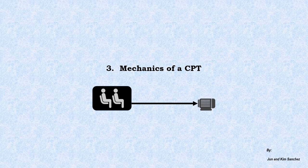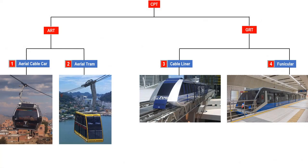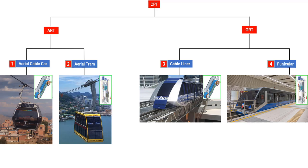This section covers the mechanics of a CPT. The types of movements of the four different types of CPTs can be correlated to an elevator or escalator. The propulsion mechanisms of an aerial cable car and cable liner are almost like an escalator, while the propulsion mechanisms of an aerial tram and a funicular are almost like an elevator.